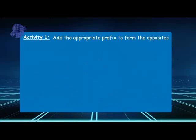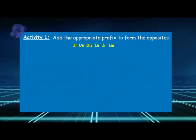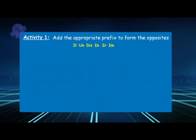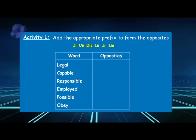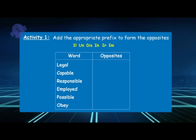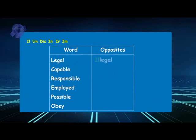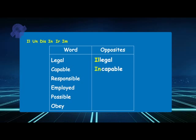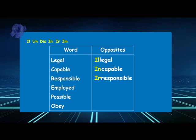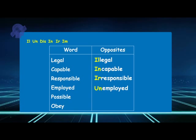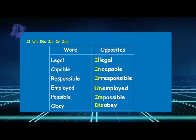In this activity you need to add the appropriate prefix to each word. The prefixes are: il, in, ir, dis, and im. The words are: legal, capable, responsible, employed, possible, and obey. The answers are: illegal, incapable, irresponsible, unemployed, impossible, and disobey.